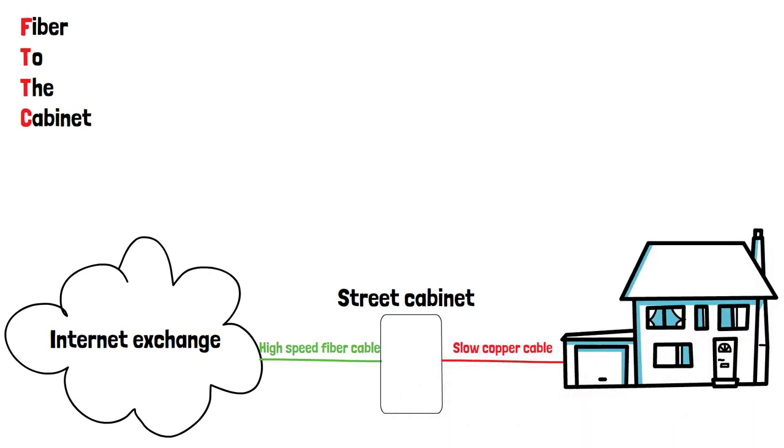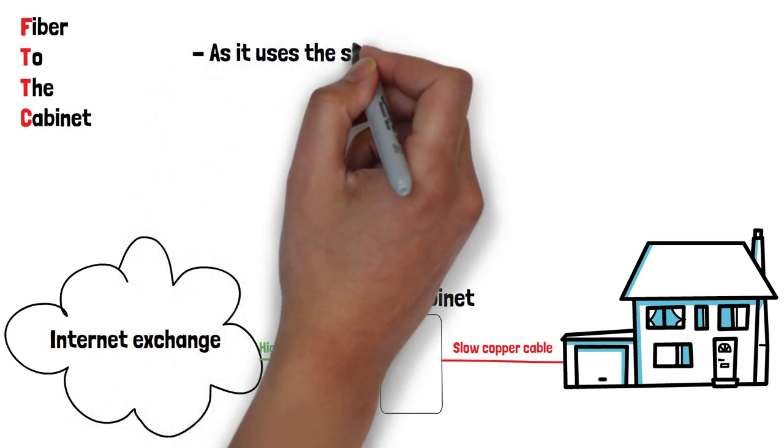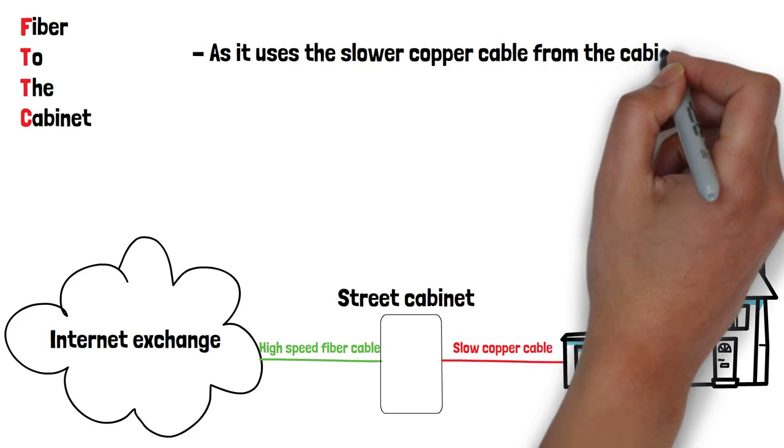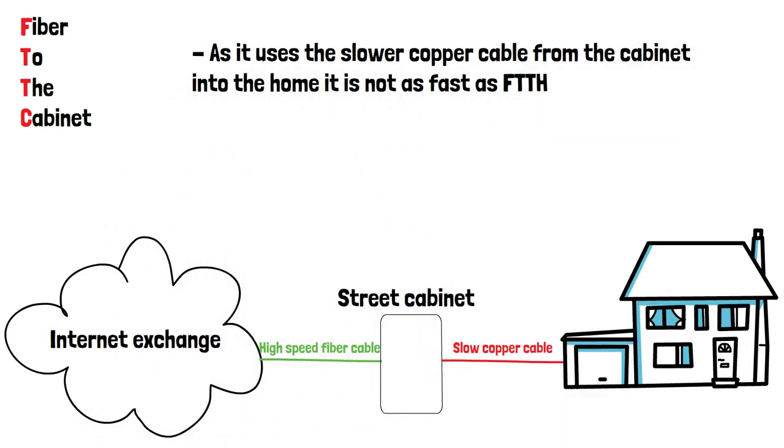This type of fiber internet can provide faster and more reliable speeds compared to traditional DSL or cable internet, as the fiber optic cables can transmit data at much higher speeds. However, it uses the slower copper cable from the cabinet into the home, so it is not as fast as FTTH.